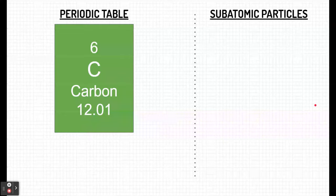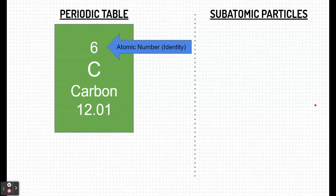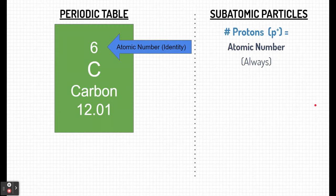The periodic table's numbers tell us a lot about the subatomic particles. The top number up here is known as the atomic number. That's the identity of the element. You might recall that the identity of an element is determined by the number of protons. So this number, the atomic number, is just the number of protons, and that's always true for each element you see on the periodic table.